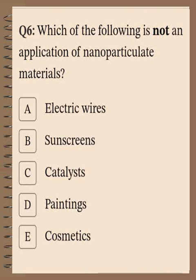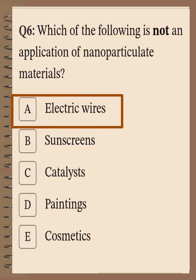Question number seven: Which of the following is NOT an application of nanoparticulate materials? The choices are: electric wires, sunscreens, catalysts, paints, and cosmetics. All of these are applications except electric wires. Sunscreens act as cosmetic protection, catalysts speed up reactions, paints provide protection for surfaces like aircraft, and cosmetics protect against environmental factors.